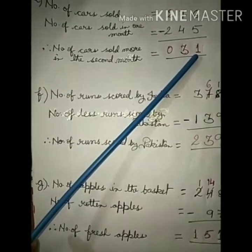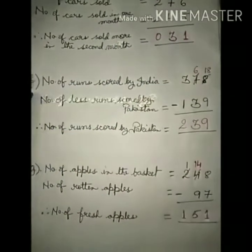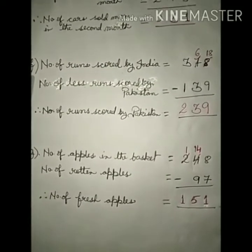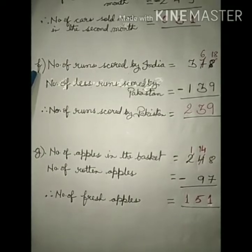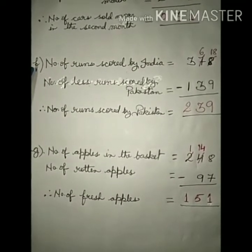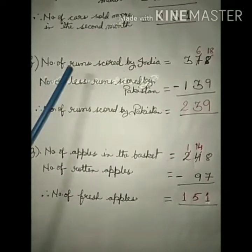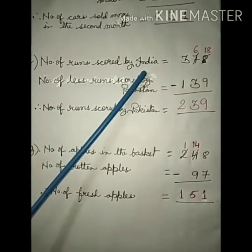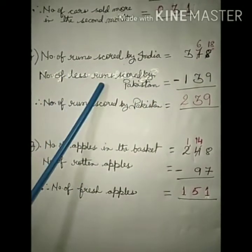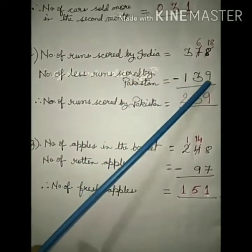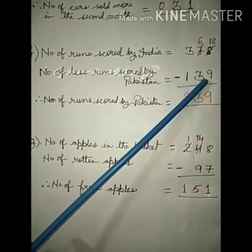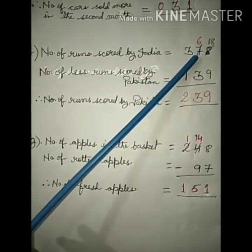Next question F: In a cricket match, India scored 378 runs and Pakistan scored 139 runs less than the Indian team. So how many runs did Pakistan score? Answer: Number of runs scored by India: 378. Number of less runs scored by Pakistan: 139. Now subtract: 8 minus 9, cannot do, so you have to borrow 1 from tens place. So now it becomes 18.